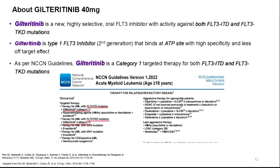Focusing on relapsed refractory FLT3-mutated AML, the only approved targeted therapy in this situation is giltretinib. Giltretinib is a highly selective oral FLT3 inhibitor, active on both FLT3 ITD and FLT3 TKD. It is a Type 1 FLT3 inhibitor that binds to the ATP site, making it highly selective for FLT3 with less off-target toxicity. Giltretinib is approved for relapsed refractory AML and is Category 1 in NCCN guidelines.